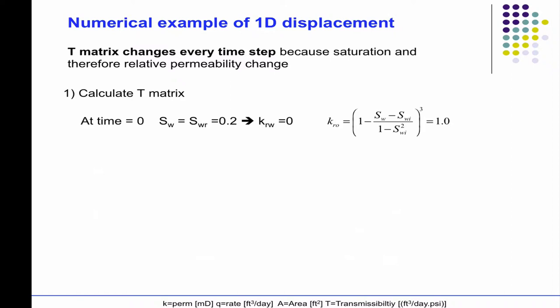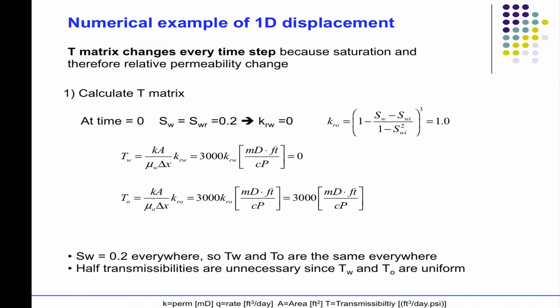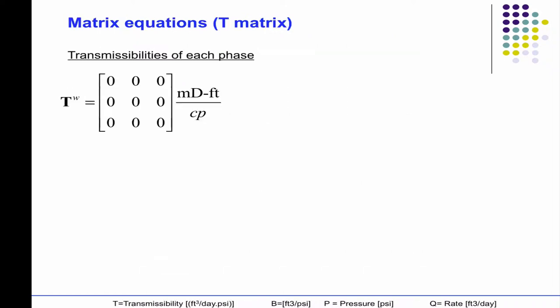now the T matrix actually changes every time because of the saturations. So here, we just go through the actual computations for the T of water, T of oil. The half transmissibilities are unnecessary because this is homogeneous. So while they change every time step, from block to block, they don't change.